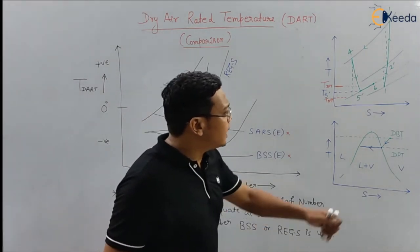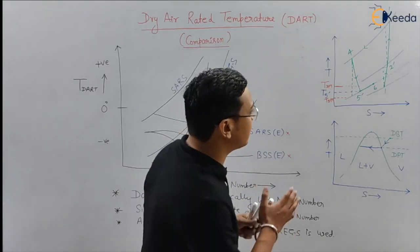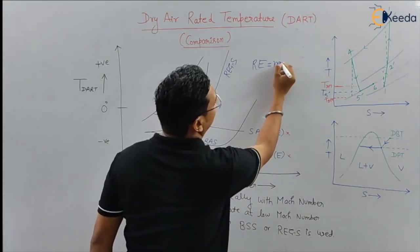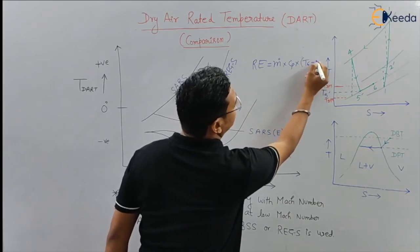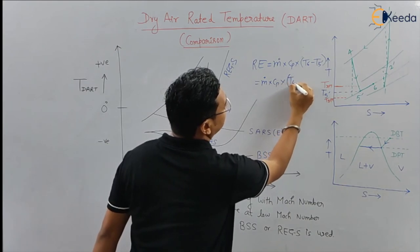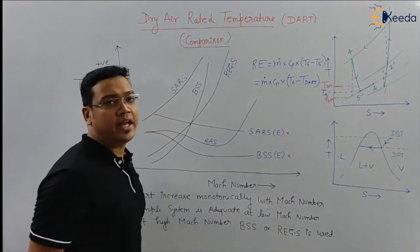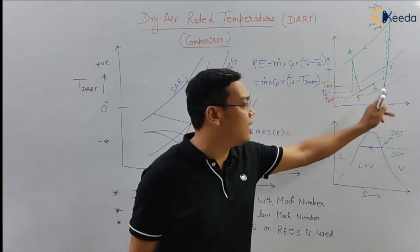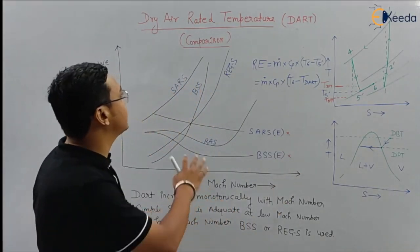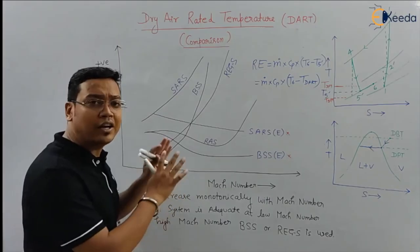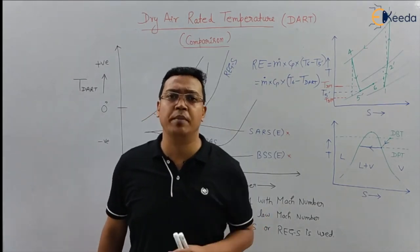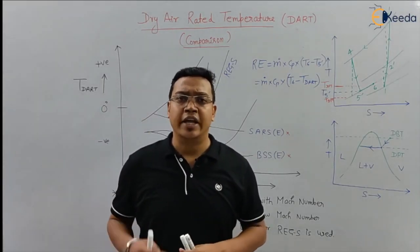One more thing: for the process 5-dash to 6, the refrigeration effect equals mass flow rate × Cp × (T6 − T5-dash), which can also be written as mass flow rate × Cp × (T6 − T_dart). This is the cooling capacity or refrigeration effect for the system. In the next video we will do some numericals on air refrigeration systems. Thanks for watching and have a good day.